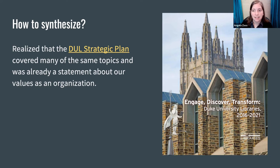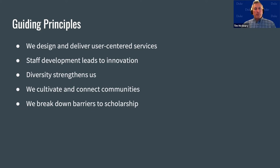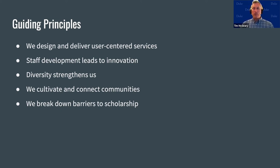The task force realized that DUL already has a guiding document: the 2016–2021 strategic plan. We noticed that the guiding principles and priorities within the strategic plan cover many of the same topics as our privacy primers. DUL's guiding principles are value statements that cut across library departments and projects—high-level goals we can keep in mind as we organize our work and make decisions about resources. Each area has broad but useful implications for our work to educate patrons about privacy concerns and protect patron privacy in our own systems and services.